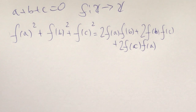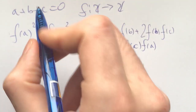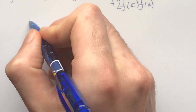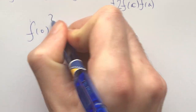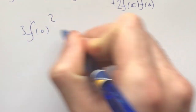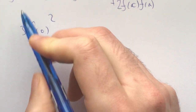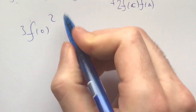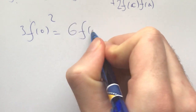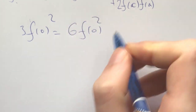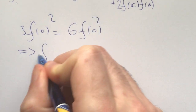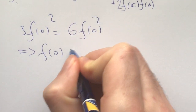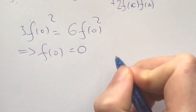The first order of business is plugging in a = b = c = 0. We get f(0)² × 3 on the left-hand side and 6f(0)² on the right-hand side, which implies f(0) = 0.